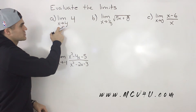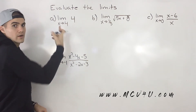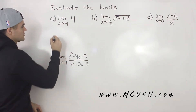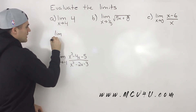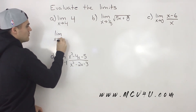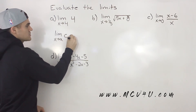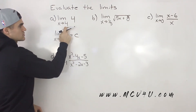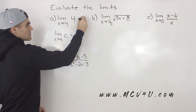We have the limit as x approaches 4 of 4. What is that going to equal? Well, as we've mentioned before, the limit as x approaches a number of a constant is always just going to equal that constant. So the answer to this is 4.